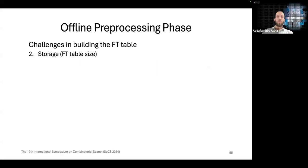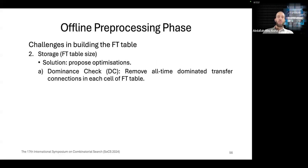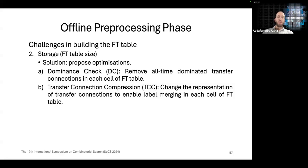The second challenge would be the storage. We can get a large FT table. We solve this issue by proposing some optimizations. We have two optimizations in this paper. The first one is the dominance check, which removes all time-dominated transfer connections in each cell of the FT table. The second optimization called transfer connection compression, where we change the representation of transfer connections to enable label merging in each cell of the FT table.